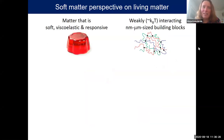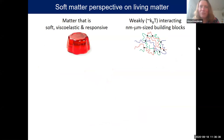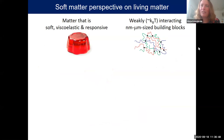We are interested in mechanics of cells and tissues, and we take the perspective of a soft matter scientist. That is related to my background, which is on colloidal and polymeric soft matter. Soft matter is a very broad class of systems defined by their properties being soft, viscoelastic, and highly responsive. They have these properties because they consist of weakly interacting building blocks with interactions in the range of k_BT.